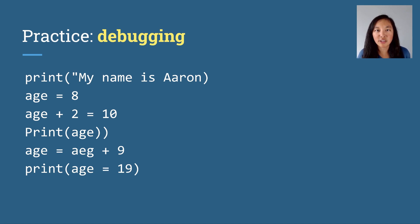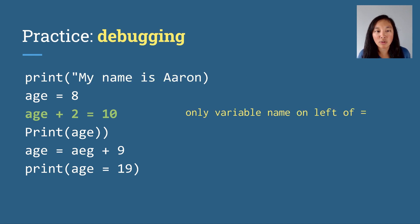So let's go over the debugging exercise. This is the code that we see, and in this one we'll see that it's missing a quote. In this line we'll see that only variable names on the left of the equal sign are allowed.